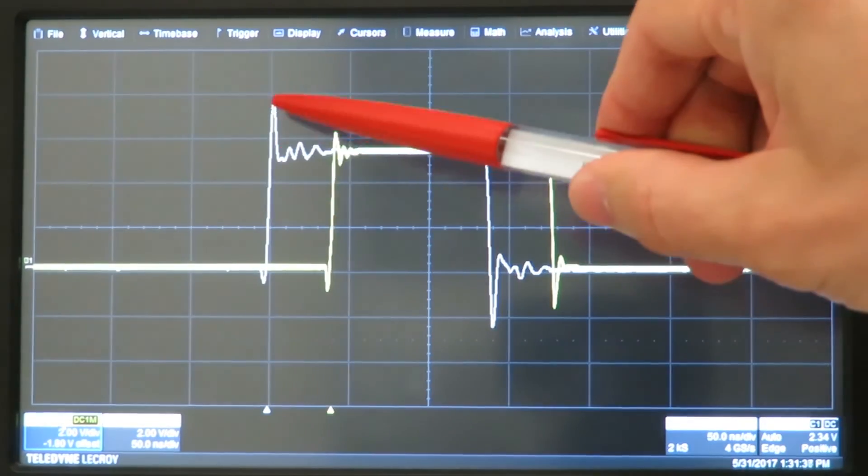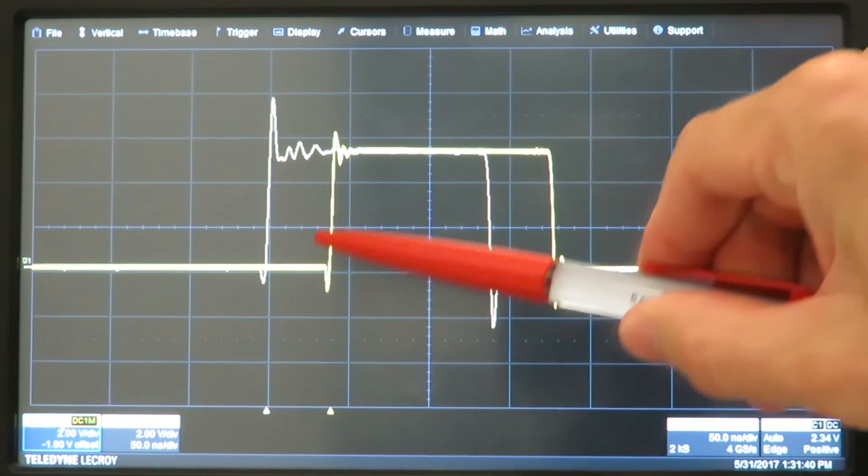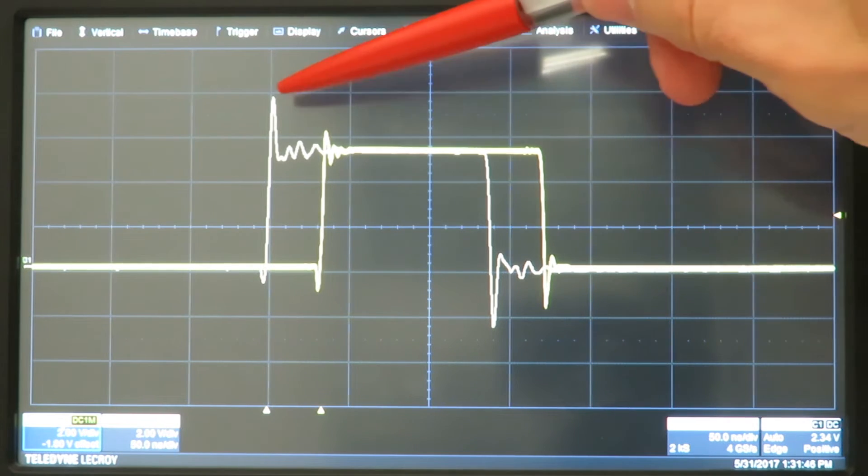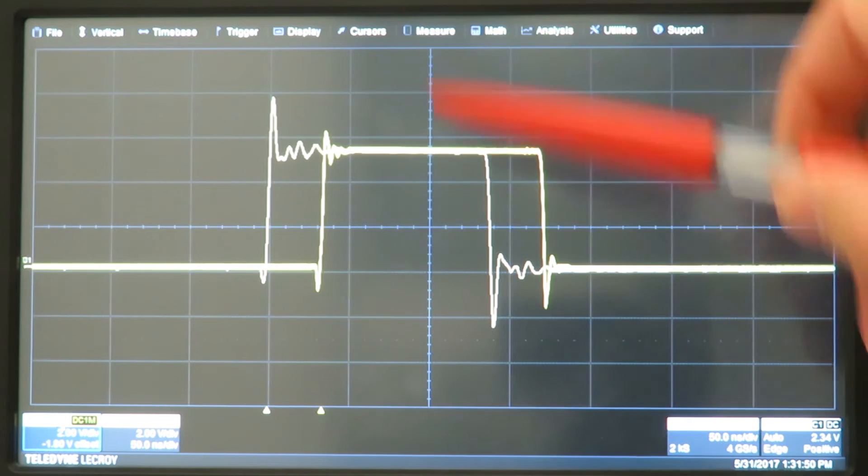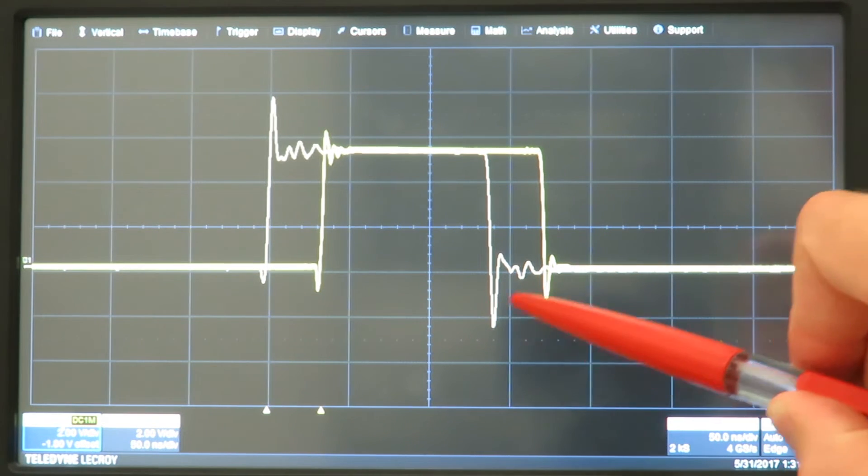The white trace shows the previous measurement setup. The yellow trace shows the setup with the low inductance probe technique. And we can see a reduction in overshoot of almost two volts as well as a reduction in undershoot by about one volt.